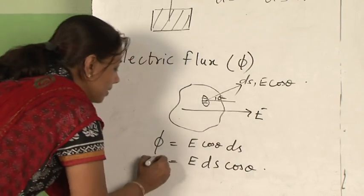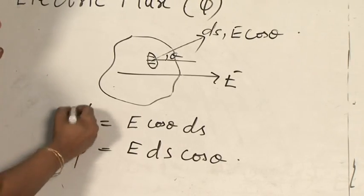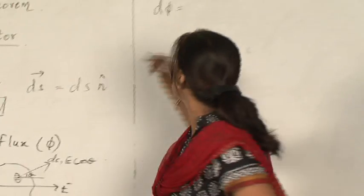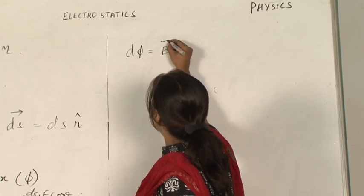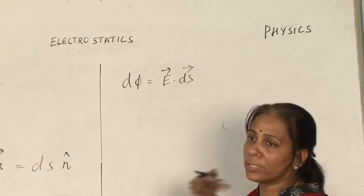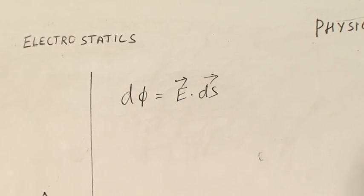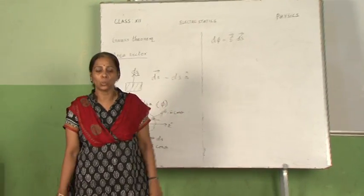The electric flux is a scalar product. Since I am taking a small area, I should assume dS. So dS will be equal to — and this is a scalar product — I can just write down E dot dS. E is a vector quantity, the area vector is also a vector quantity, and this product is a scalar. So the electric flux is E dot dS.